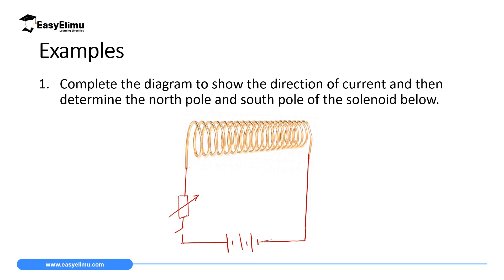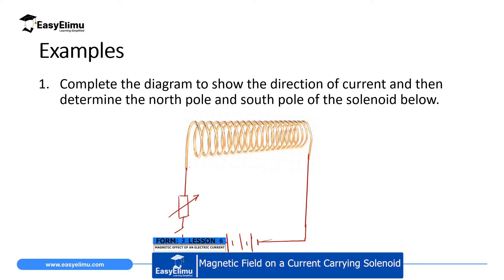Let's handle an example. The question reads: complete the diagram to show the direction of current and determine the north pole and south pole of the solenoid. To complete the diagram, you must first show the direction of current in the wire and in the solenoid, so you need to identify the positive and negative terminals of the battery.